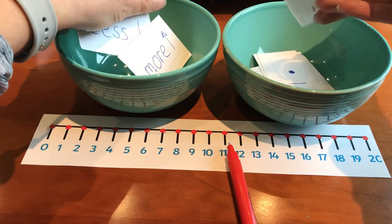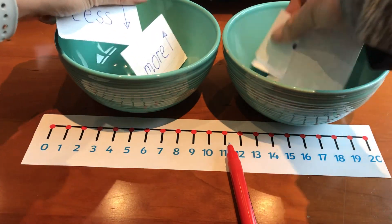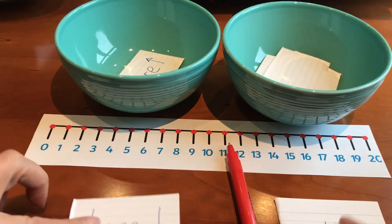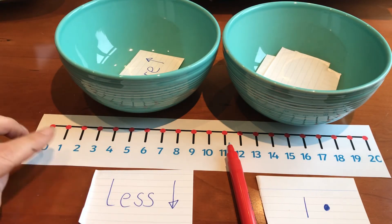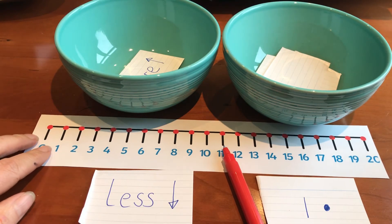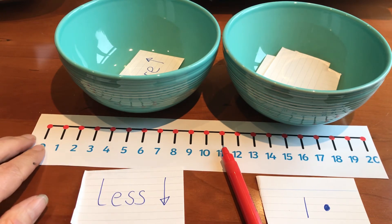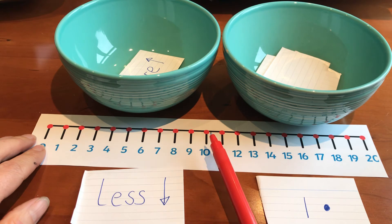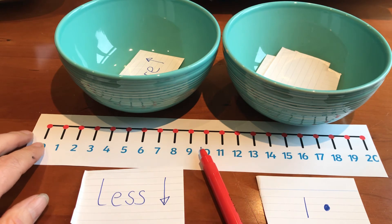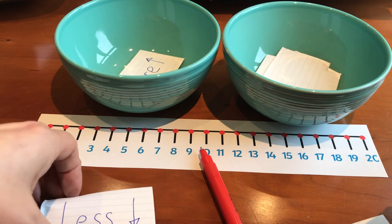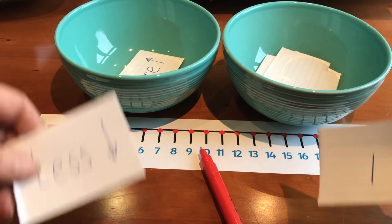This game would take a very long time, wouldn't it, if you played it forever. Right, what have I got now? I've got less 1. So I'm on 11, I need to count down 1 because I'm going to do 1 less than 11. So I'm going to move down to number 10. Right, I'm not going to stay here and do this until I get up to 20 because it might take me all day.